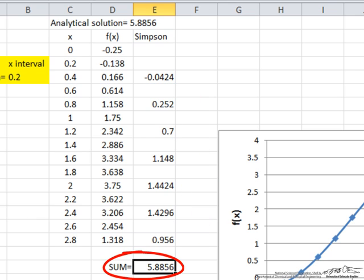This cell is just the sum of these values to get the total interval. And then you notice that we get 5.8856, actually the same value we get from our analytical solution. So Simpson's rule, particularly for a well-behaved function, works quite well.